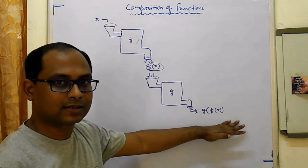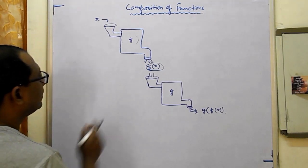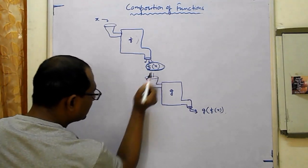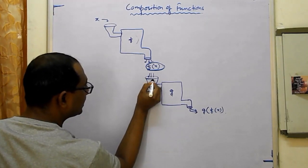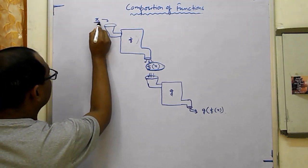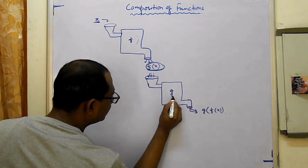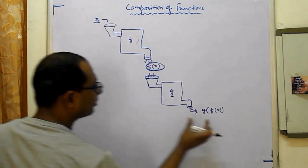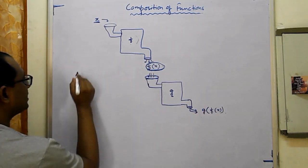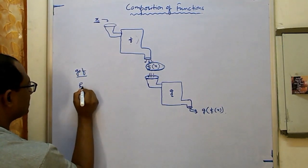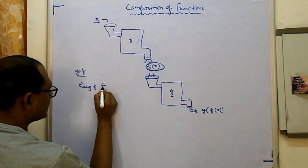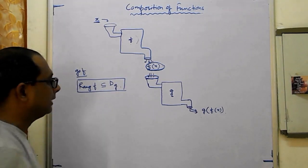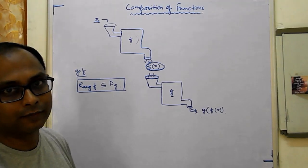So x under f gives f(x), and all those f(x) must go into g so that we get the final output as g of f(x). The criteria for g∘f to exist: the range of f — when x becomes f(x), we call that the range of f — must be a subset of the domain of g. That is the criteria under which g of f will exist.